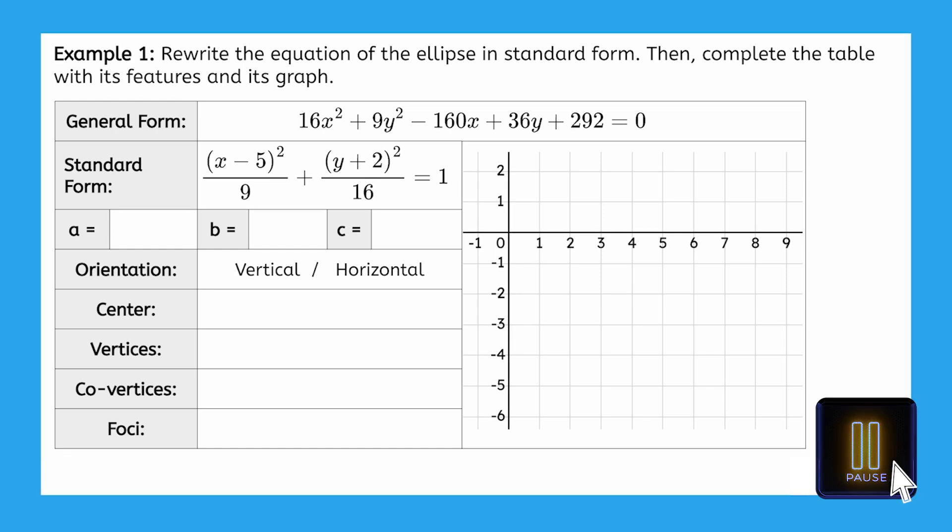We can see this ellipse is not centered at the origin, since it is translated 5 units right and 2 units down. Therefore, the center is 5, negative 2.